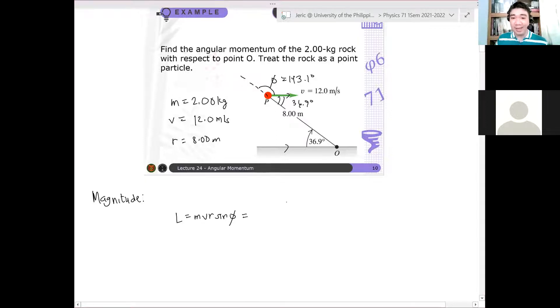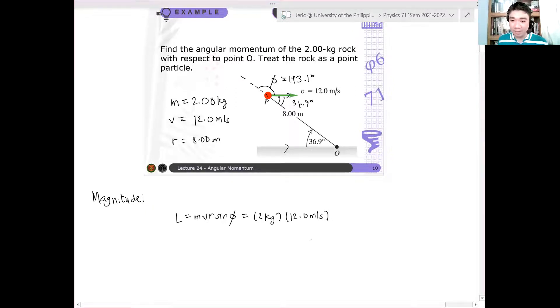Please pakicheck. And then after that, this is simply two kilograms. So I'll just substitute the values, two kilograms, 12.0 meters per second, and r is 8 meters. And then sine of 143.1 degrees. And from that, I can say that L is just, the magnitude of L is 115 kilogram meters squared per second.